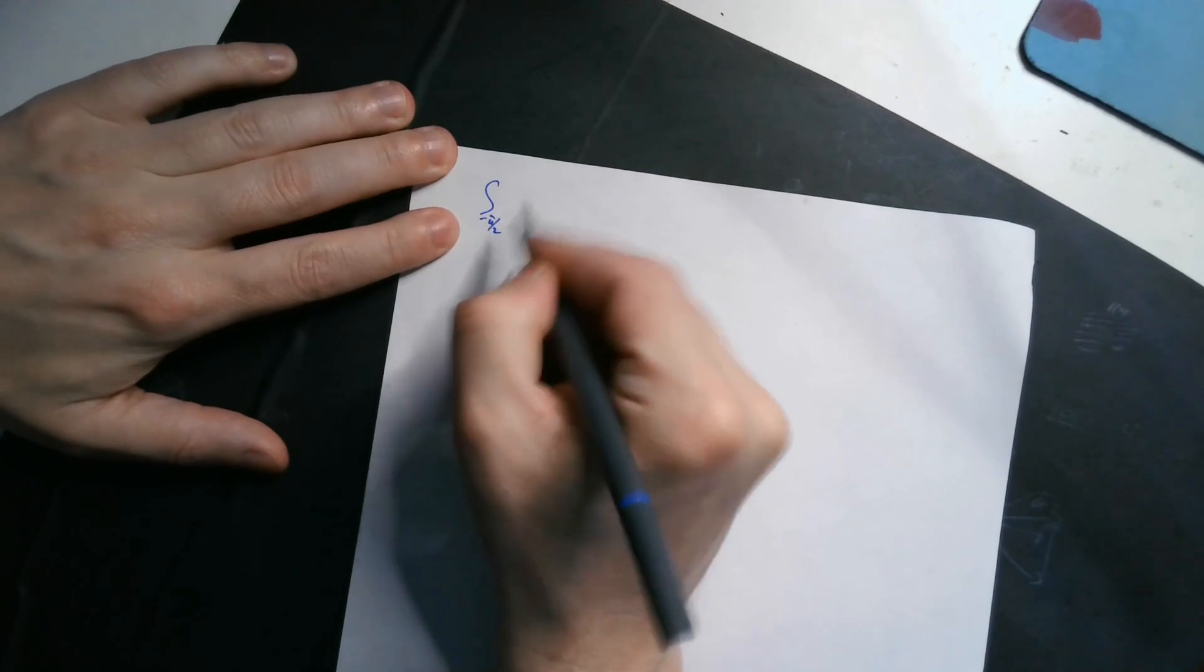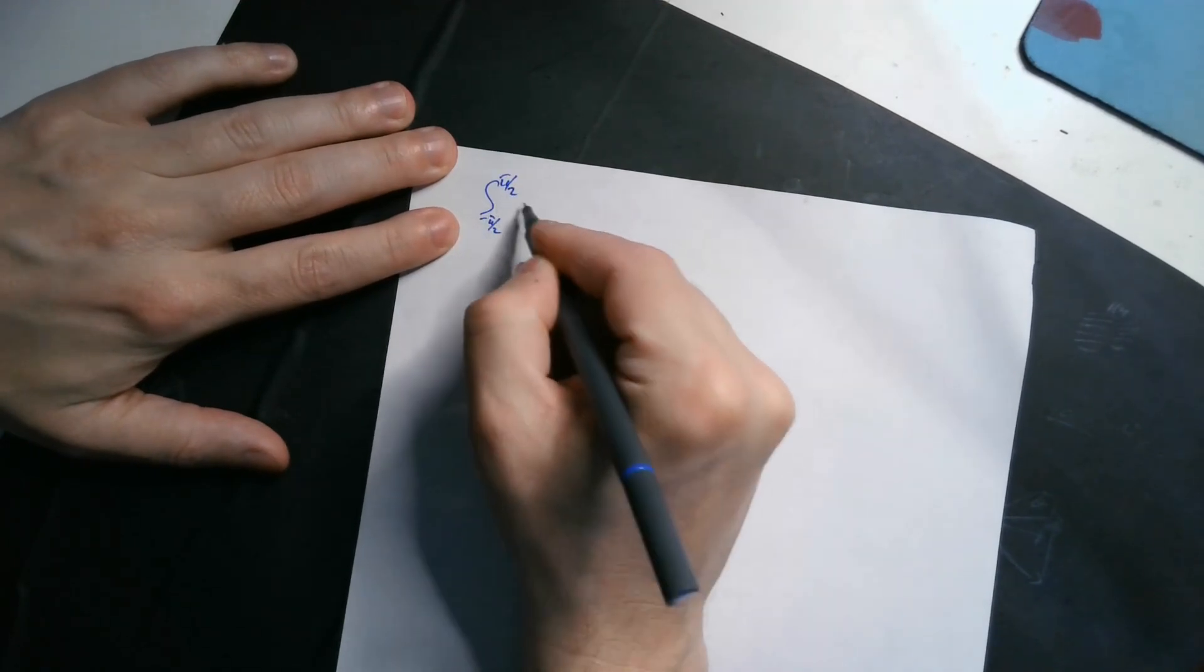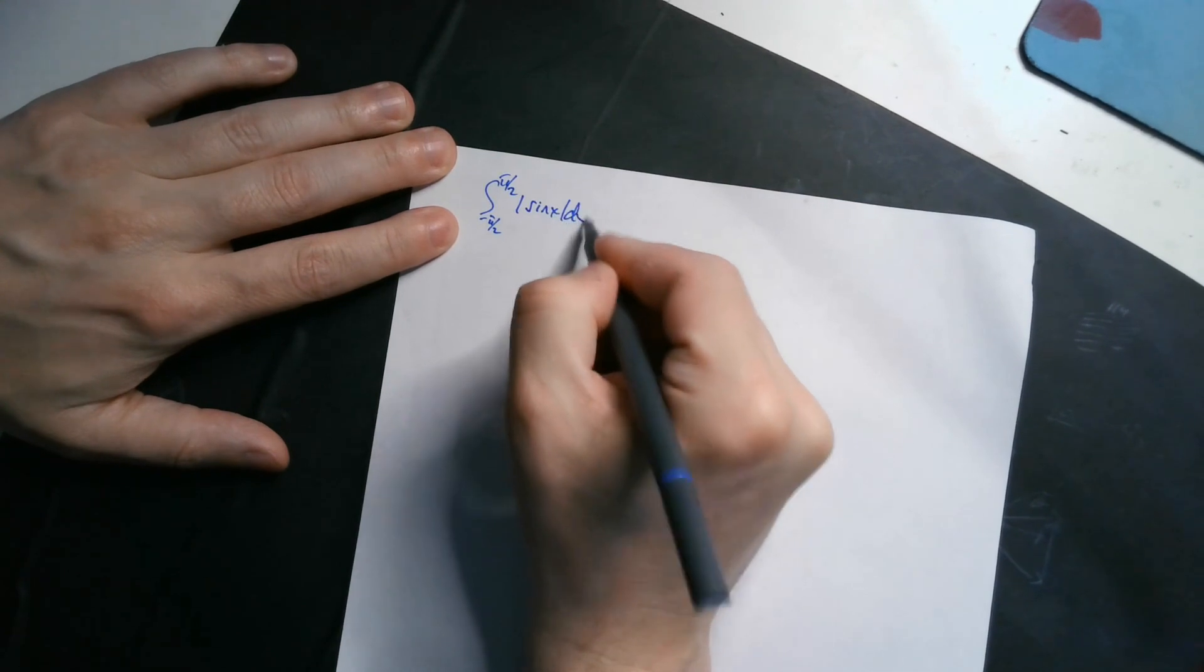Let's do the integral from negative pi over 2 to positive pi over 2 of the absolute value of sine x, and then this is dx.